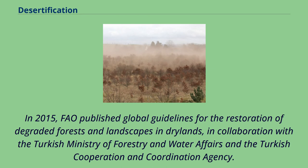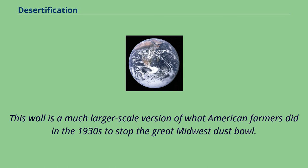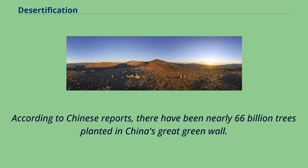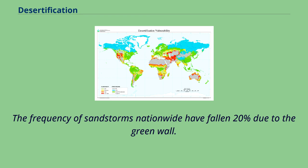In 2015, FAO published Global Guidelines for the Restoration of Degraded Forests and Landscapes in Drylands, in collaboration with the Turkish Ministry of Forestry and Water Affairs and the Turkish Cooperation and Coordination Agency. The Green Wall of China is a high-profile example of one method finding success in the battle with desertification — a much larger-scale version of what American farmers did in the 1930s to stop the Great Midwest Dust Bowl. This plan was proposed in the late 1970s and has become a major ecological engineering project not predicted to end until 2055. According to Chinese reports, nearly 66 billion trees have been planted, and the Green Wall has decreased desert land in China by an annual average of 1,980 square kilometers. The frequency of sandstorms nationwide has fallen 20% due to the Green Wall.